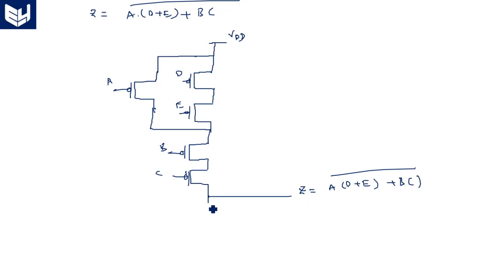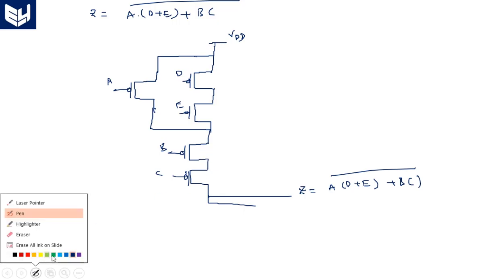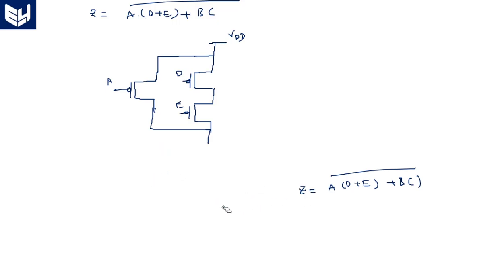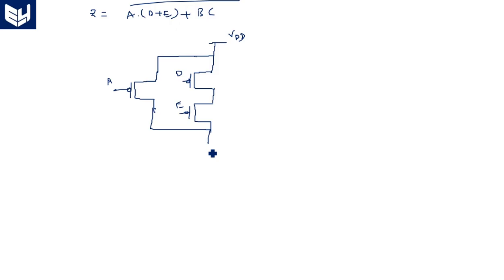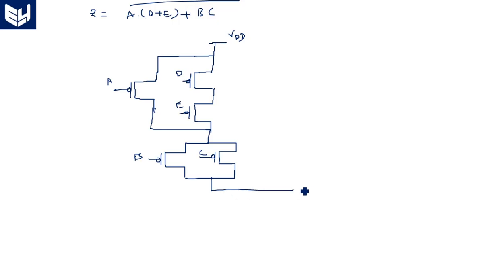In the bottom part — the NMOS network — wait, let me correct: B and C are in product combination in the expression, so in the PMOS network they should be in parallel. This parallel combination is in series with A·(D+E). B and C are placed accordingly, and the output Z = A(D + E + BC)̄ is confirmed.